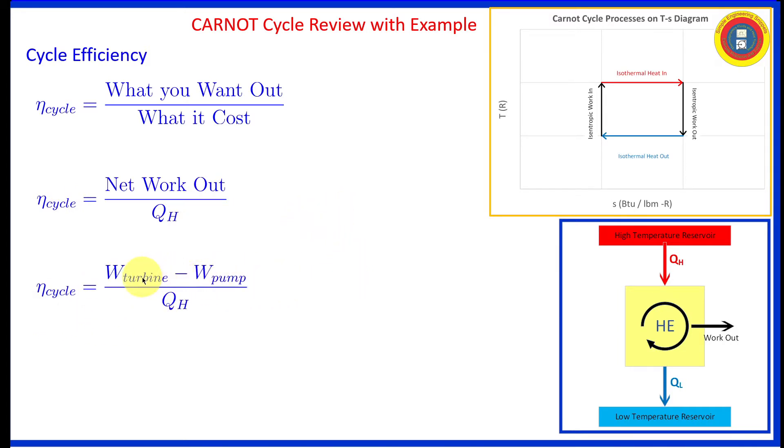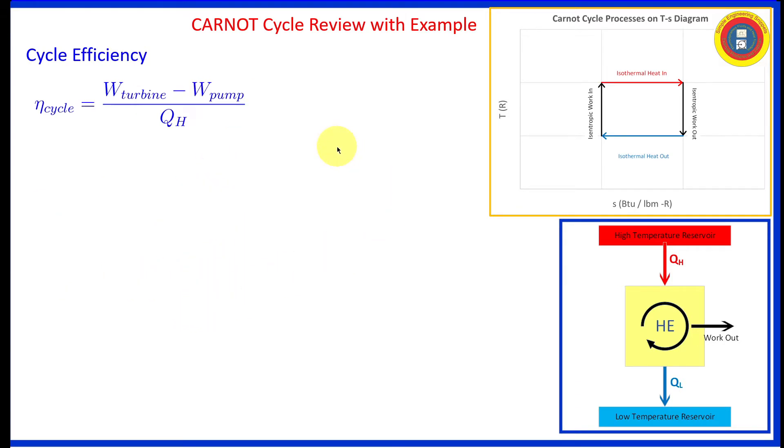In terms of this cycle, it's going to be the work of the turbine, which is producing work, minus the work of the pump. That's the net workout divided by the heat in. This is true for any heat engine.